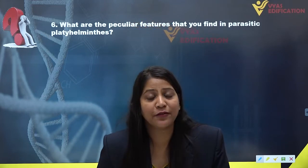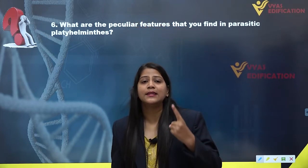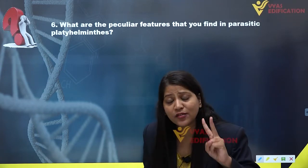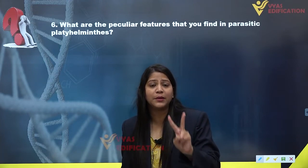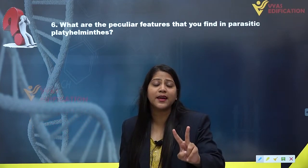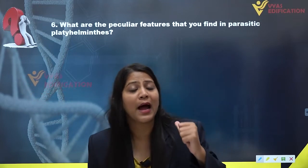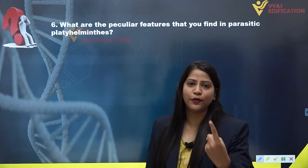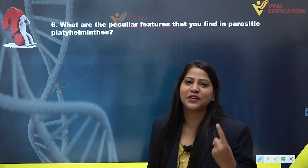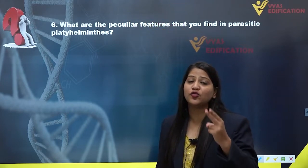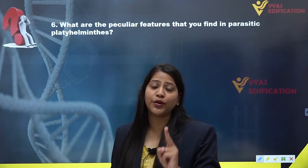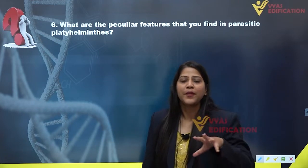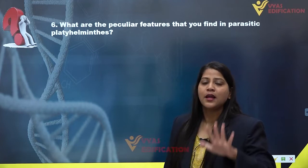We know that we have Taenia, which is known as tapeworm, and we also have Fasciola, which is known as liver fluke. These two organisms included in the platyhelminthes are the parasitic forms. They are parasites included in the phylum platyhelminthes.